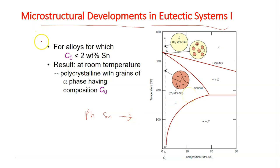So the first case for which the alloy of lead and tin in which the C0, the composition that we are looking into, is actually less than 2% of tin. If it's less than 2% of tin, it's actually located at the almost pure region of lead.